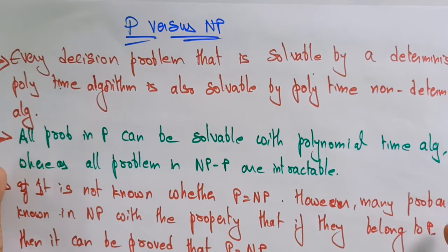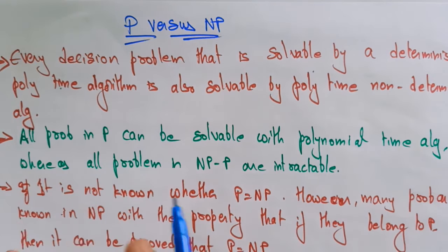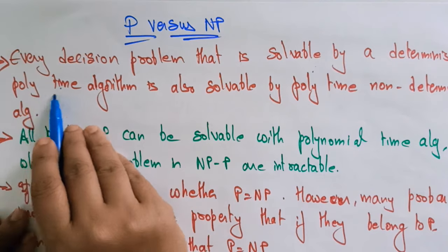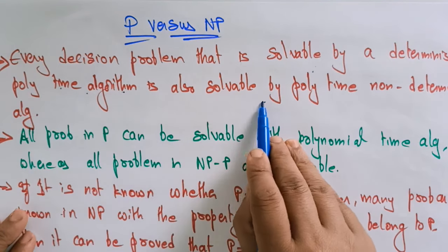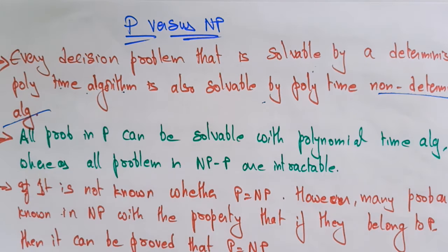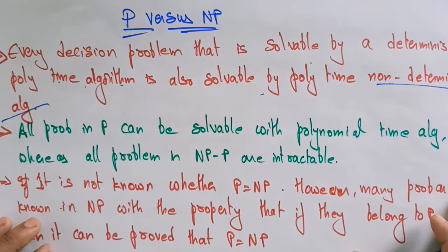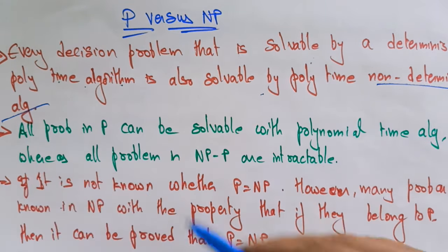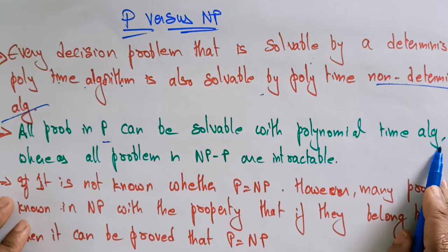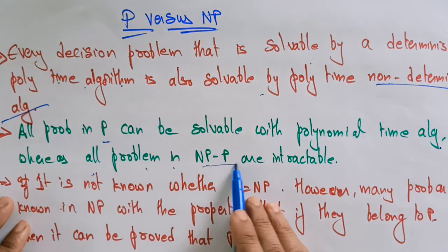Now coming to P versus NP — what is the main difference between class P and class NP? Every decision problem that is solvable by a deterministic polynomial time algorithm is also solvable by a polynomial time non-deterministic algorithm. All problems in P are solvable with polynomial time algorithms, whereas the problems in NP minus P are intractable.